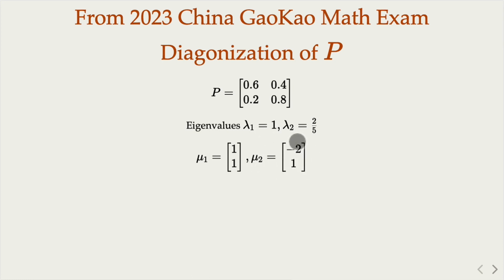Then you have matrix diagonalization of this form. P can be decomposed as S, which is formed by the two eigenvectors, times diagonal matrix with eigenvalues 1 and 2/5, times the inverse matrix of S.